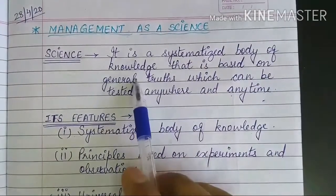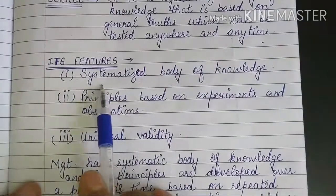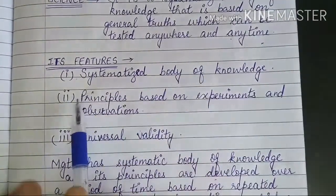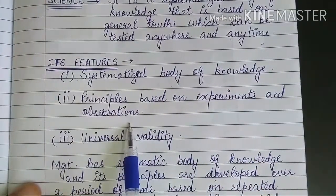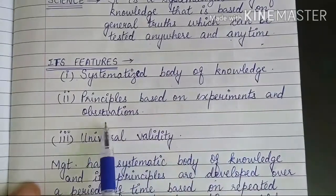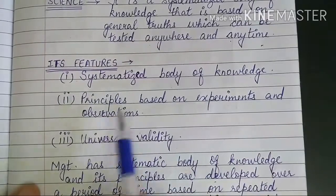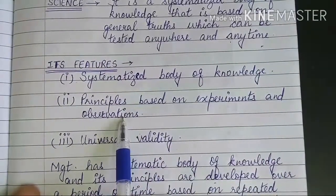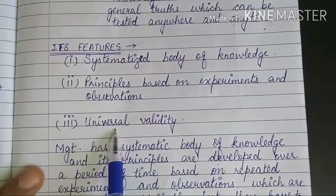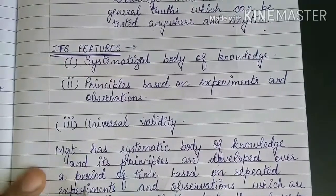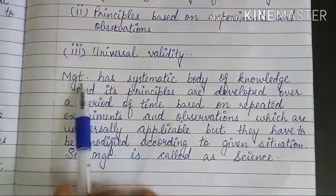The features of science are: first, a systematized body of knowledge; second, science is based on the principles of experiments and observations — experiments and observations are conducted first, and only then are principles and guidelines applied; third, universal validity — science is universally accepted.